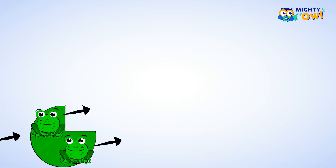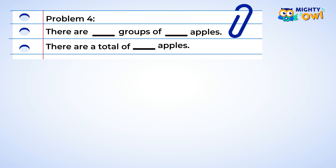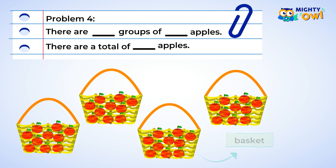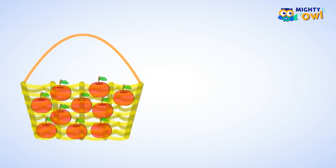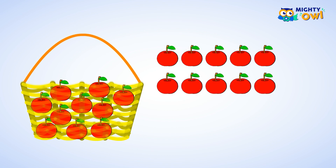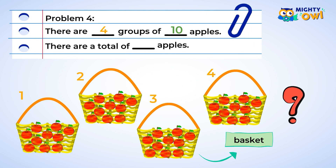Here is another practice problem. There are apples in baskets. The problem wants you to find out how many groups of how many apples there are. The baskets are the groups, so there are four groups. Four goes in the first blank. Now go ahead and count the number of apples in the basket. There are ten apples in each basket. So ten goes in the second blank.